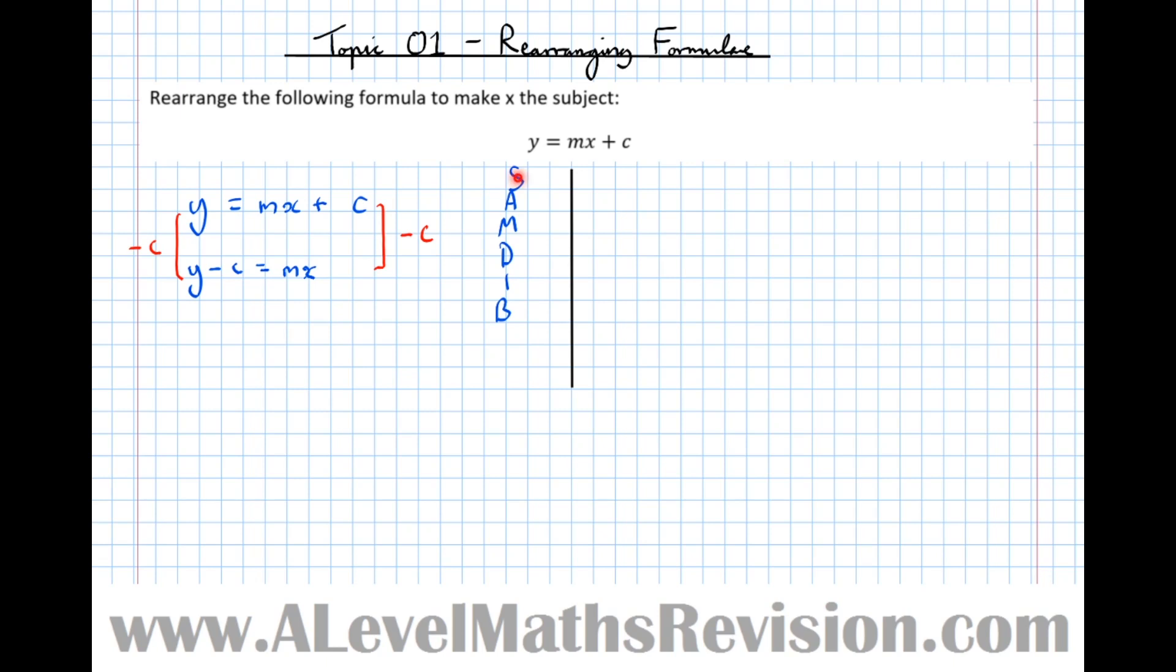Going down the list of priorities, we see a multiplication. To undo that multiplication we're going to divide by M. So divide both sides by M, and it's really important to emphasize we're dividing the whole side by M. The left-hand side becomes (Y - C)/M equals X. There we have it, we've got X being the subject of the equation.